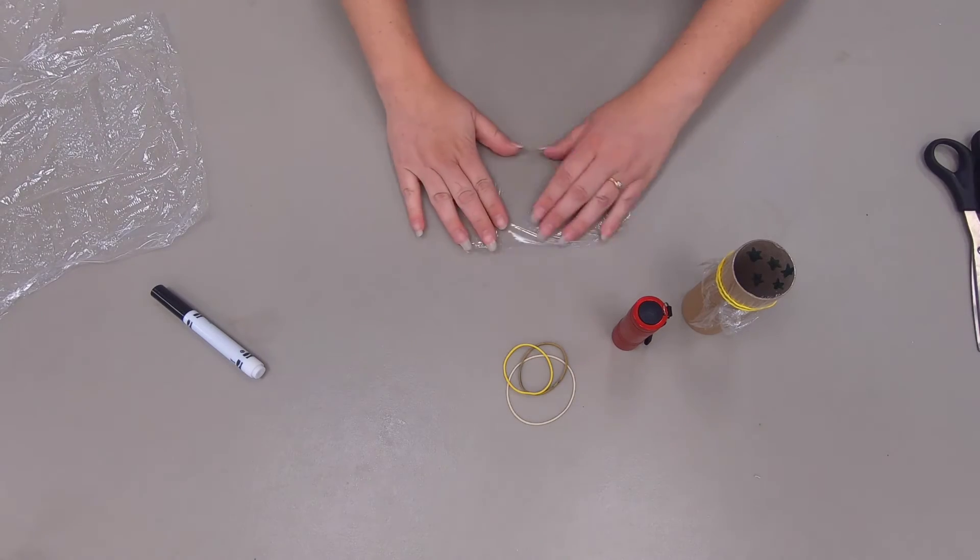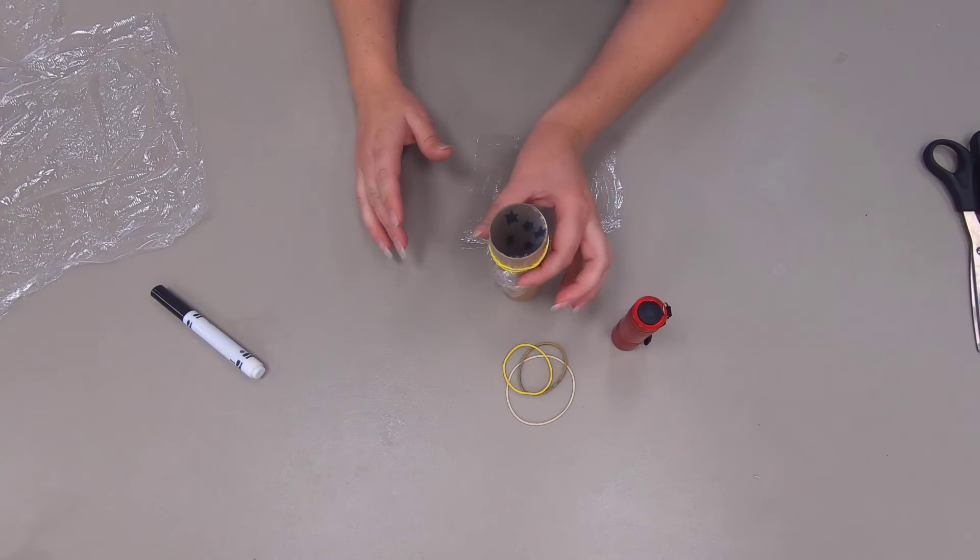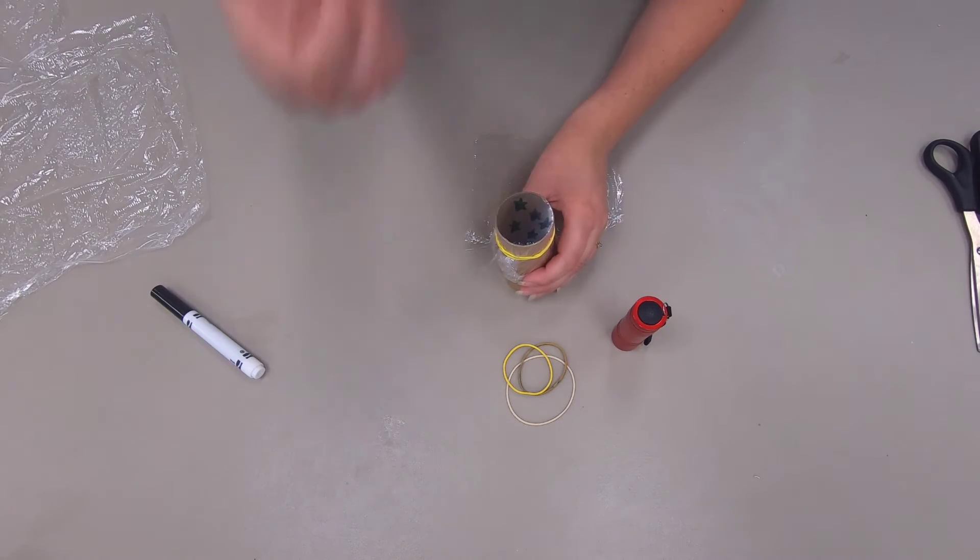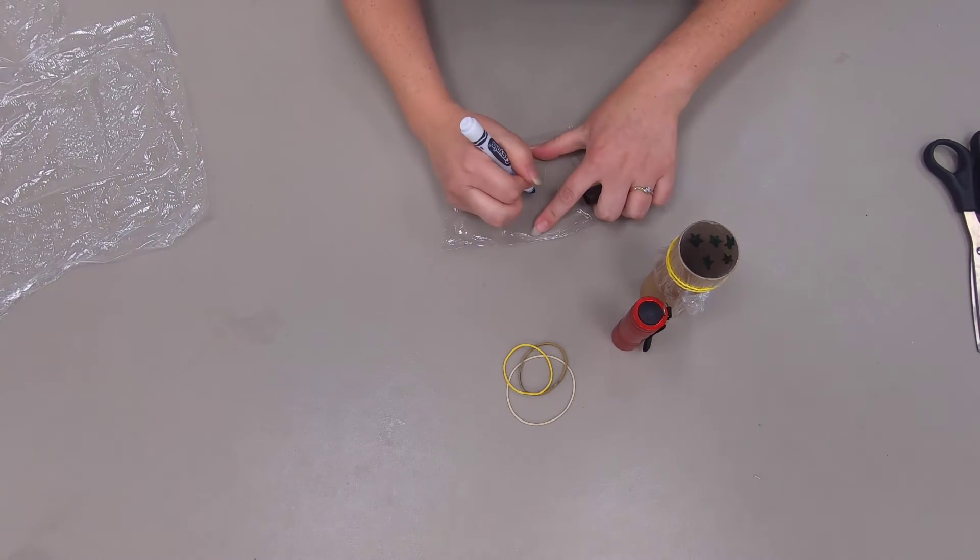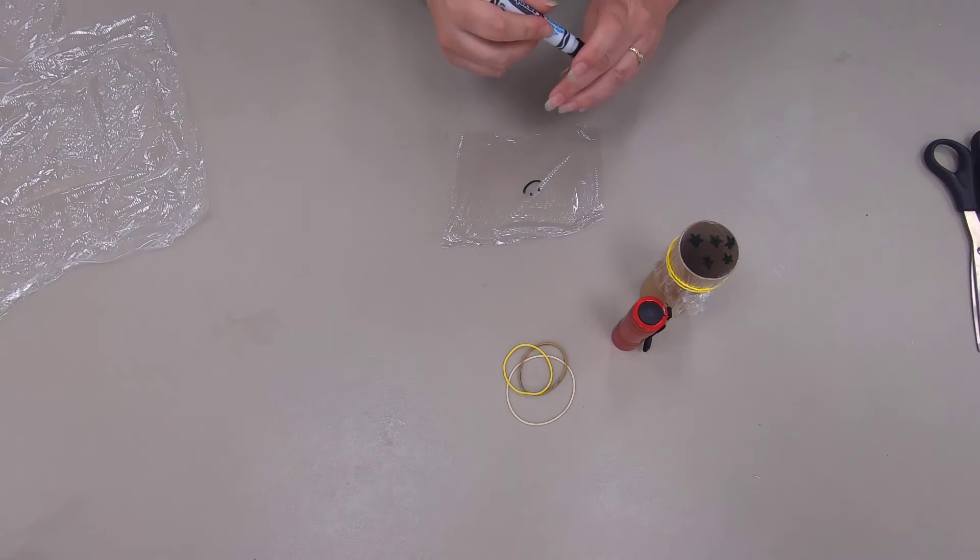You can make a couple different designs because it's really easy to change these out. All you have to do is take off the rubber band and remove the cling wrap and put the new one on. So I'm going to make a real simple one here, just a smiley face.